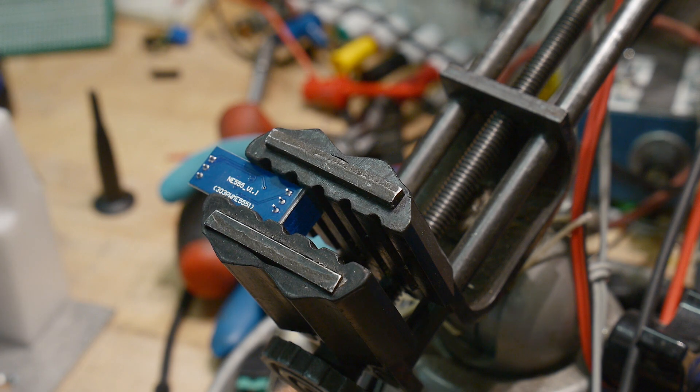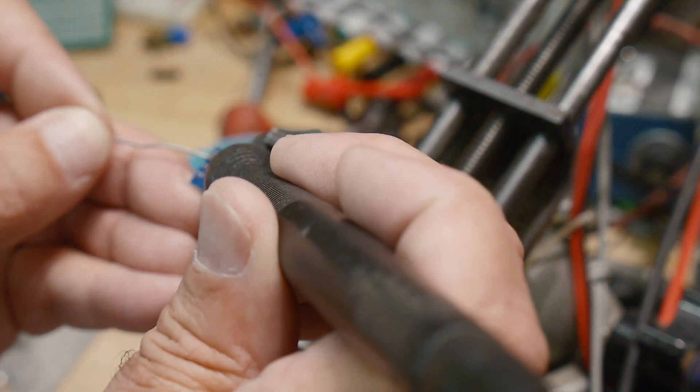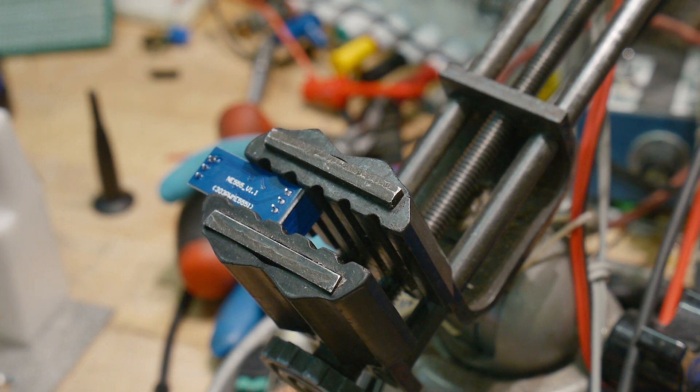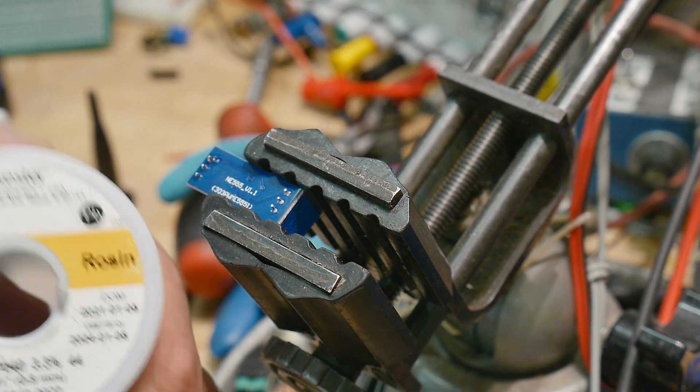Okay. So before we desolder, I'm going to put some solder on it because this is probably a lead-free solder and it just doesn't flow very well. So I'm going to put some leaded solder on it. Somebody asked me once, what type of solder do I use? And I forgot to answer them.